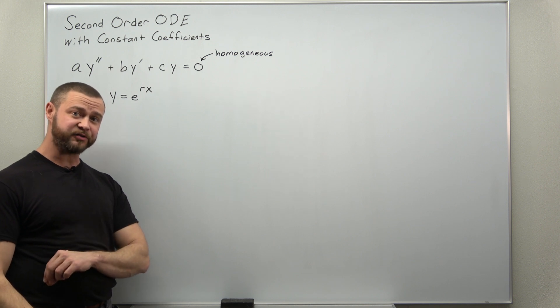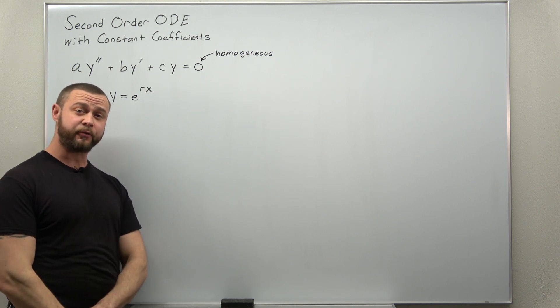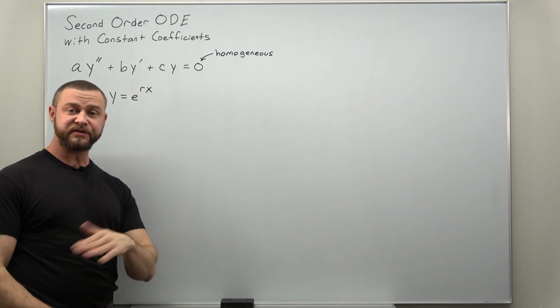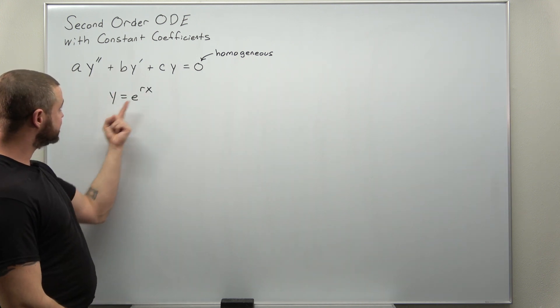Now to determine the values of r called the characteristic roots, we want to plug this into the ODE, but we're going to need the first and second derivatives in addition to the y term.